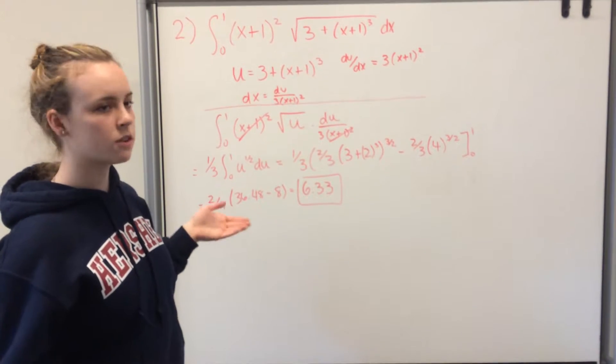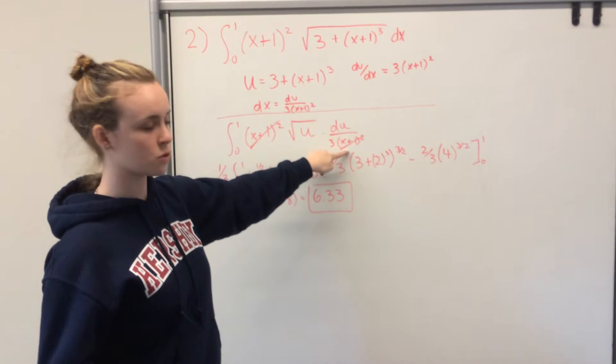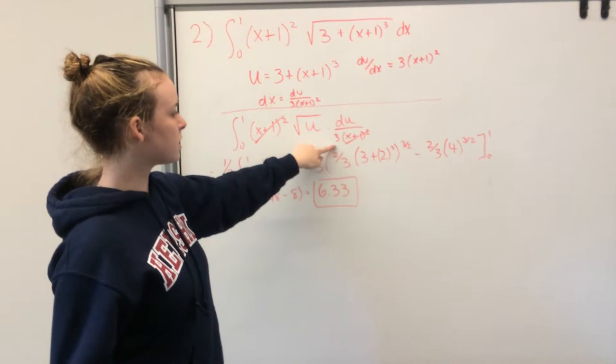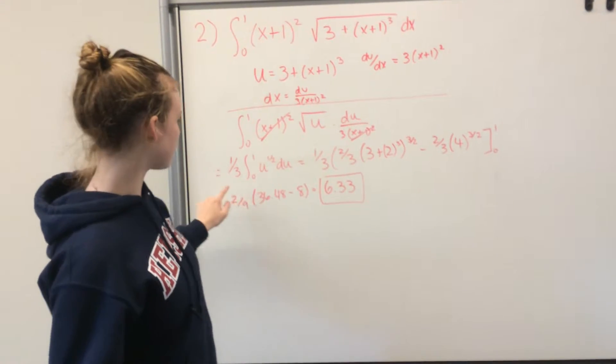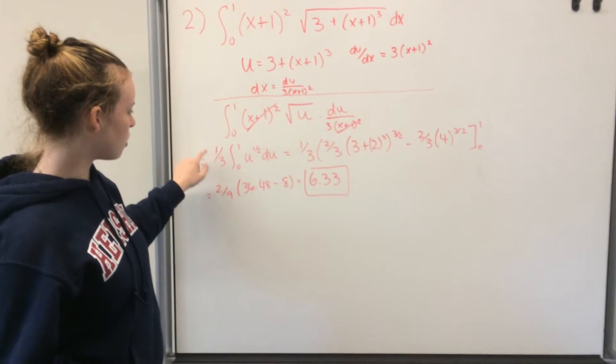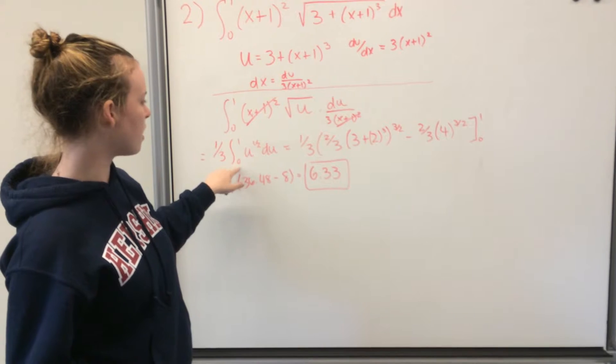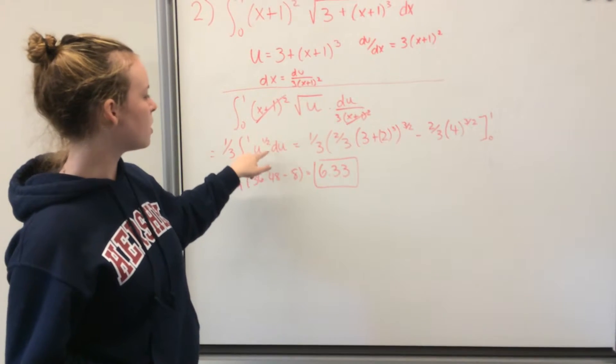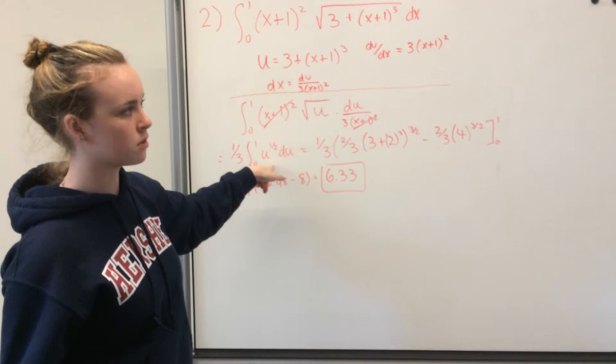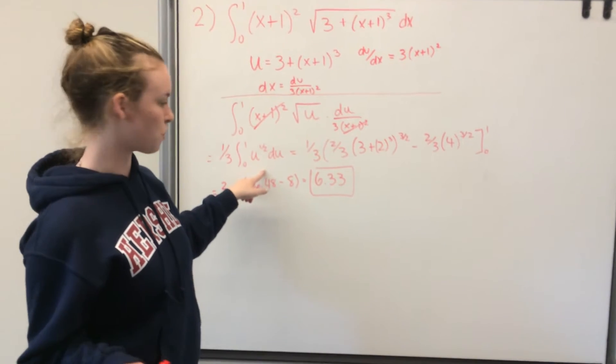The first thing you notice is that you can cancel x plus 1 squared with x plus 1 squared. And since 3 is a constant, you can bring it to the outside. So 1 third times the integral from 0 to 1 of u to the 1 half. I just changed the square root to the 1 half power because that's easier to work with.